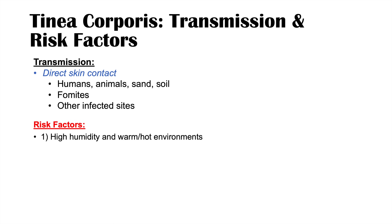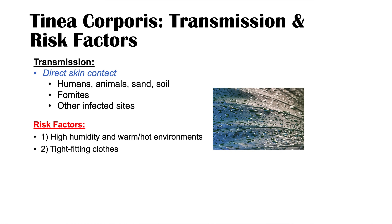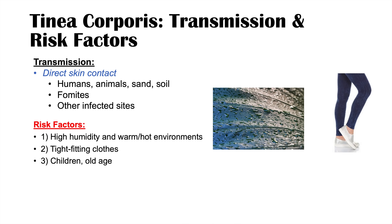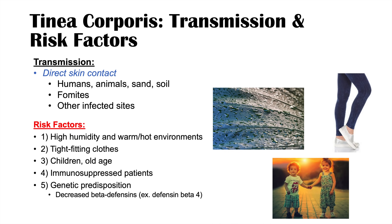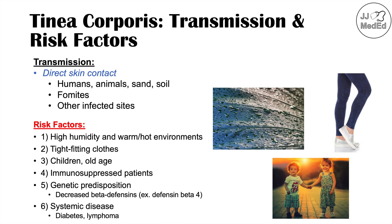Risk factors for tinea corporis include being in high humidity and warm or hot environments, and wearing tight-fitting clothing for long periods of time. It is also more common in children and older individuals, and in immunosuppressed patients. There is a genetic predisposition — individuals with decreased beta-defensins or decreased defensin beta-4 are more susceptible. Systemic diseases like diabetes and lymphoma are also associated with immunocompromise and increased risk.